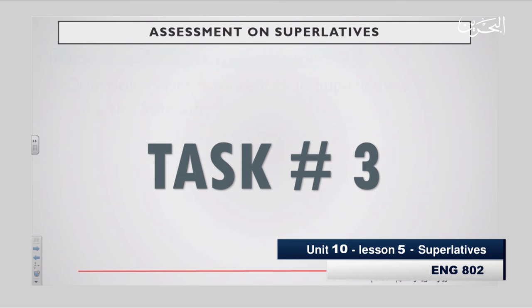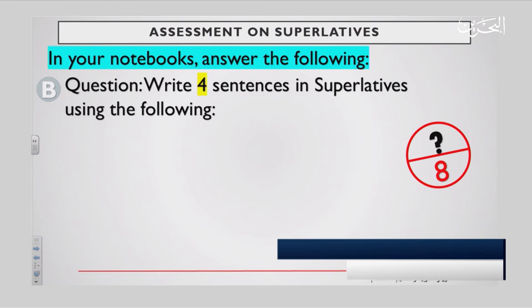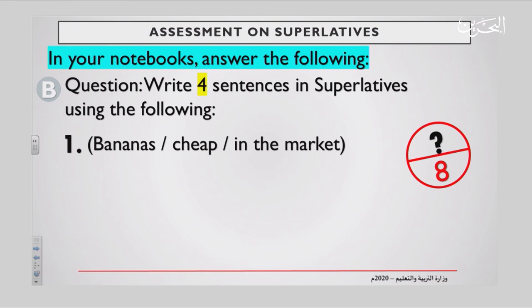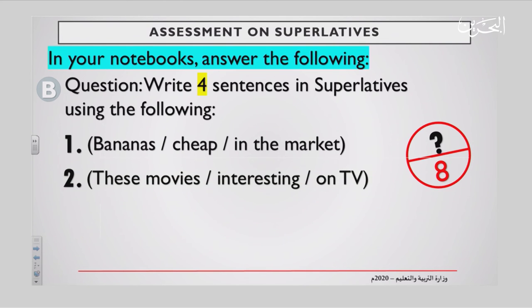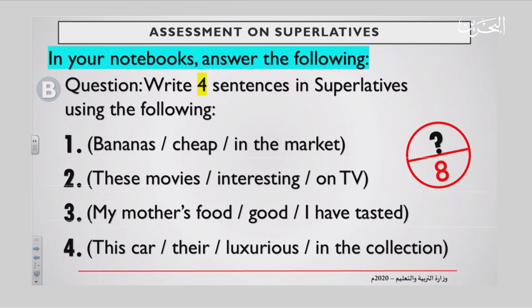Task number three: in your notebooks, answer the following. Write four sentences in superlatives using the following prompts. You have a mark of eight. Number one: bananas, cheap, in the market. Number two: these movies, interesting, on TV. Number three: my mother's food, good, I have tasted. Number four: this car, their, luxurious, in the collection. You have five minutes to answer this question.